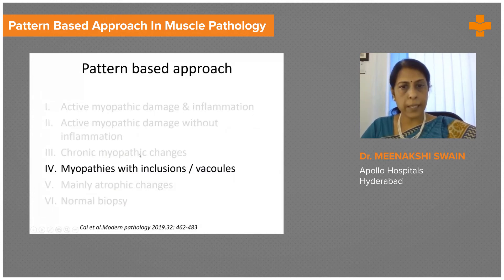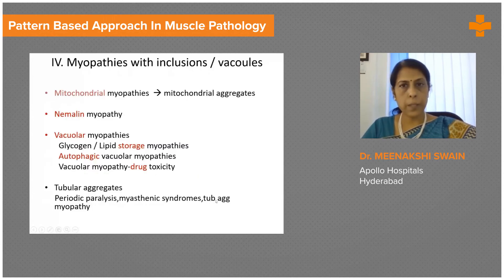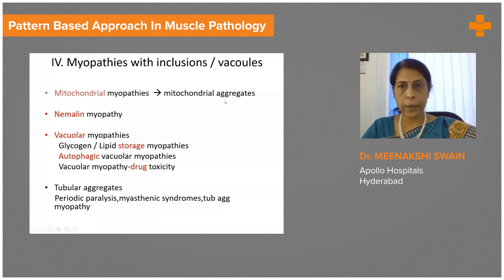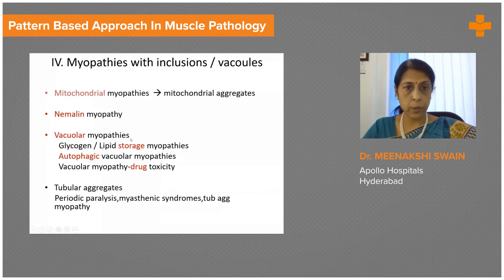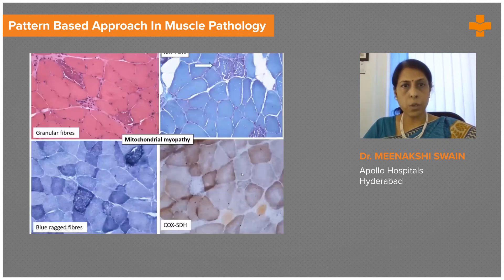That brings us to category four: myopathies with inclusions. The biggest group here are the mitochondrial myopathies, where you can get aggregates of mitochondria — that's how you make the diagnosis by recognizing them. Nemaline myopathy also has aggregates of rods, which are picked up by special stains. Vacuolar myopathies in storage disorders will show vacuoles, be it glycogen or lipid storage, and there are other rarer groups where you can get inclusions or vacuoles.